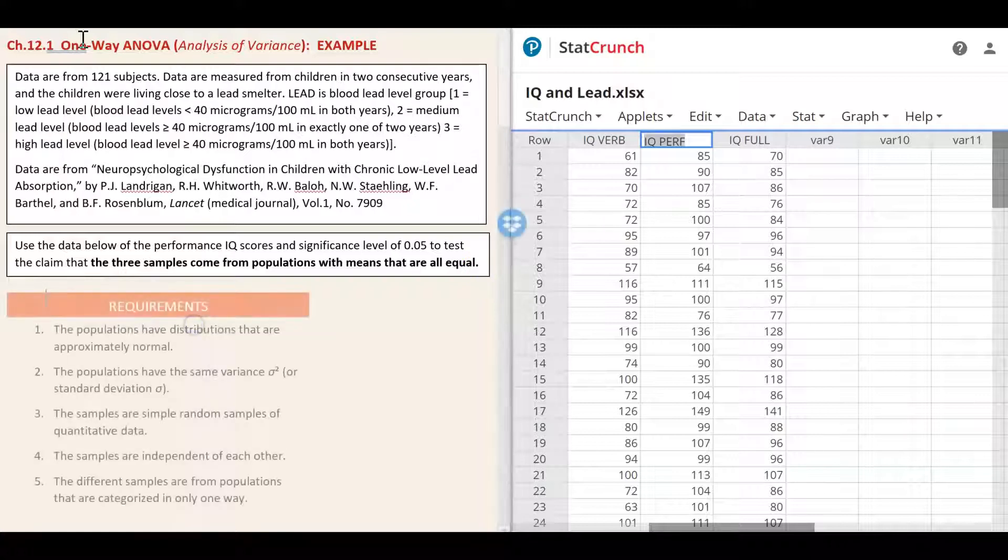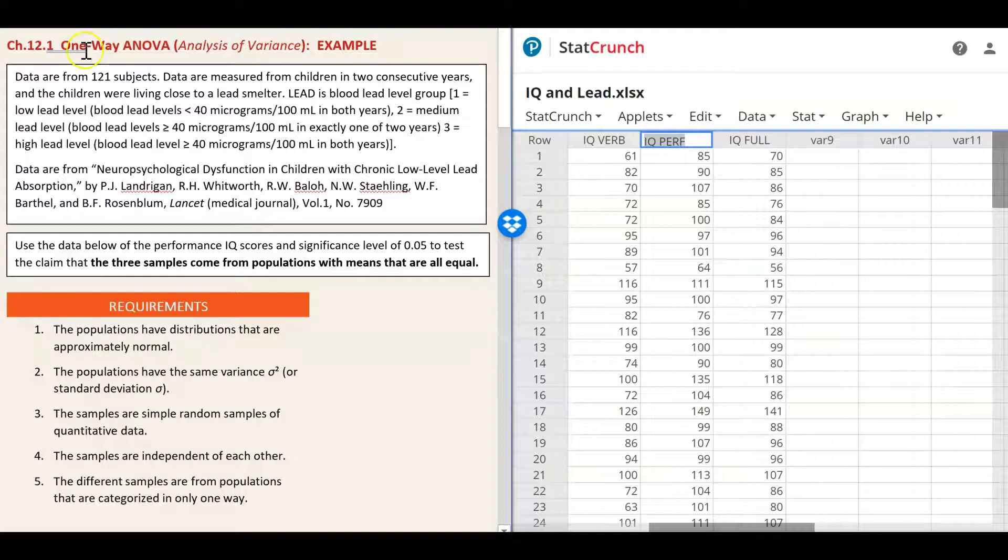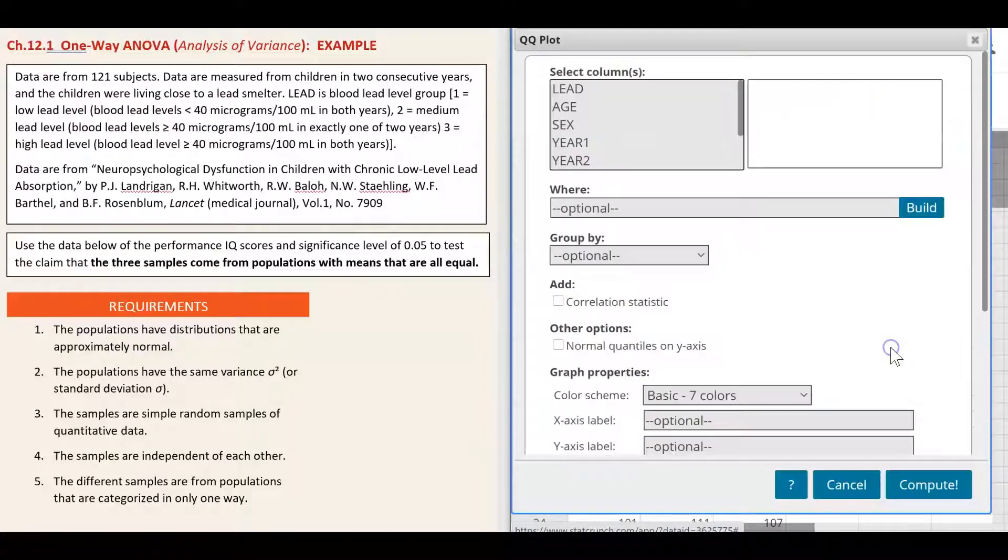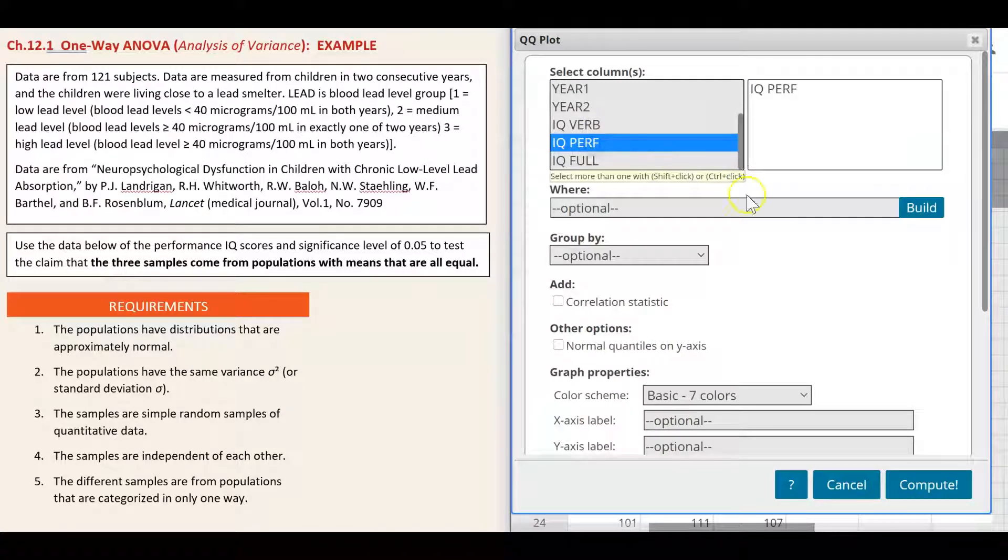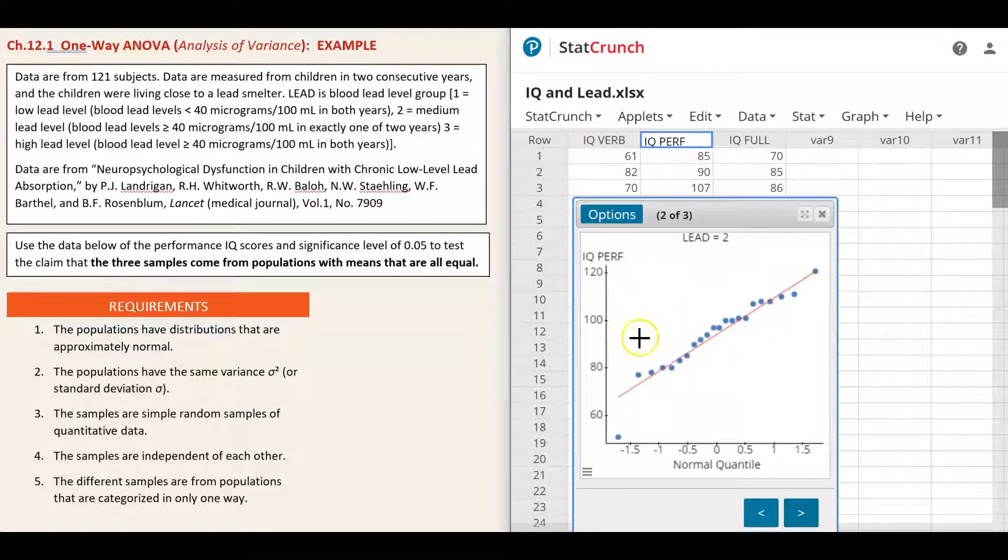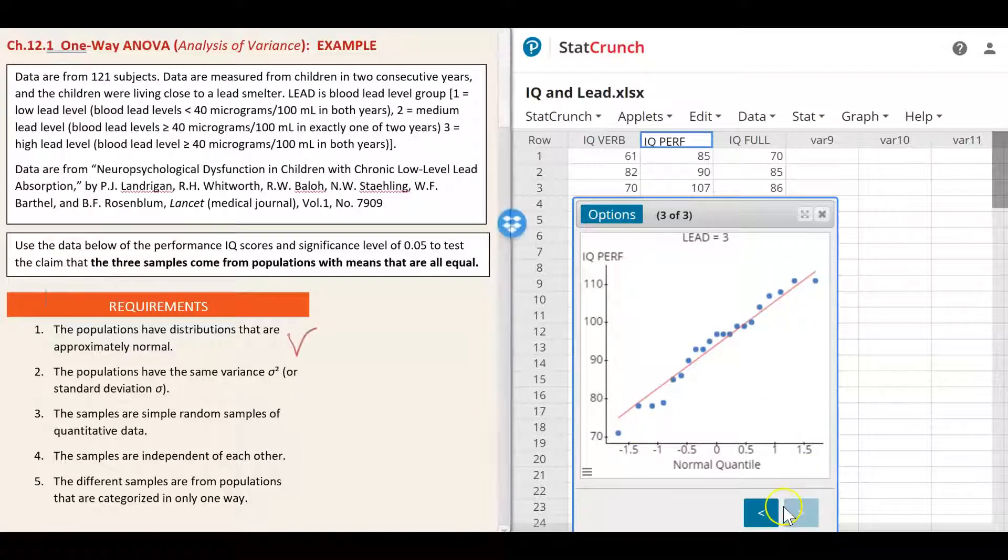Let's first check the requirements. In order to conduct a one-way ANOVA test the following requirements must be met. First, the populations have distributions that are approximately normal. To check for the normality of the distribution we will build QQ plots. Let's go to graph, QQ plot, select column IQ performance. We want to group it by the lead column. Compute. The distribution of the first level, level one, looks approximately normal. The distribution of level two, medium level, looks approximately normal too with one outlier on the left side. And the distribution of lead level three looks normal as well. So the first requirement is met. The second requirement: the populations have the same variance sigma squared or standard deviation sigma.